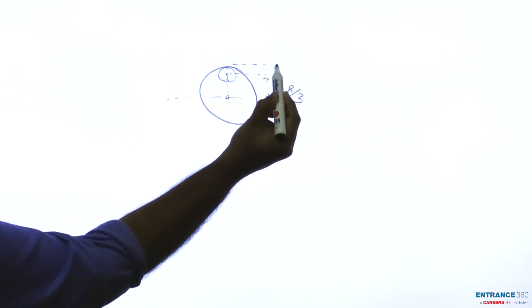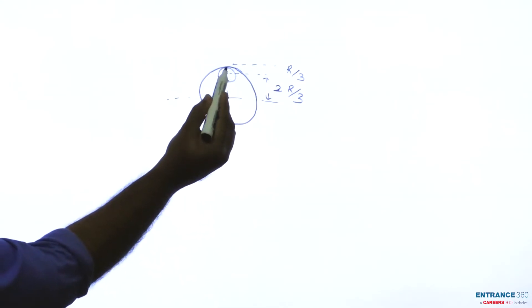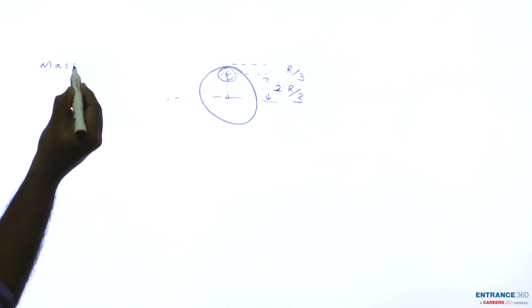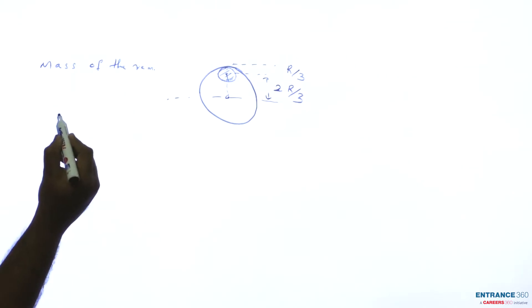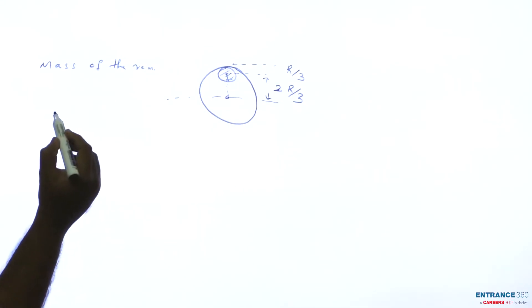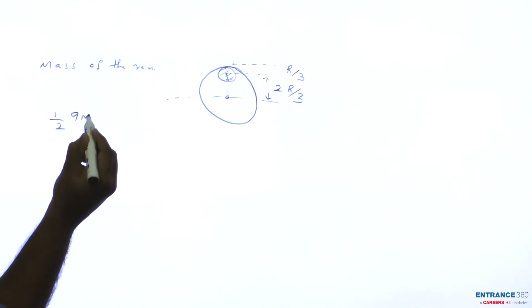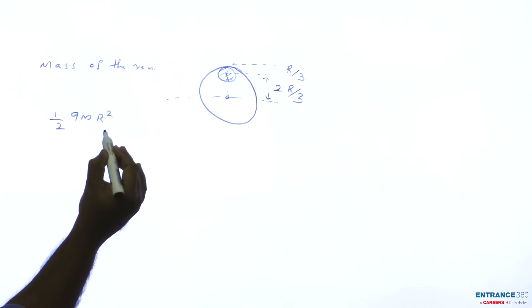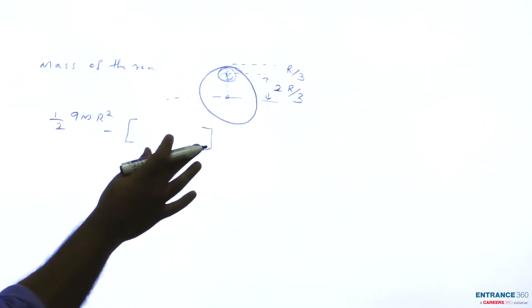This distance is r/3. We have to calculate the moment of inertia of the remaining part after removing this small portion. For that, first we calculate the mass of the removed portion. The total moment of inertia required will be the total moment of inertia of the disk about an axis passing through the center, that is (1/2) × 9m × r², minus the moment of inertia of the removed part.